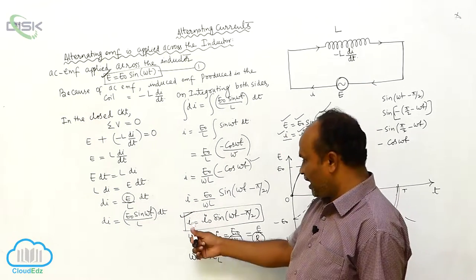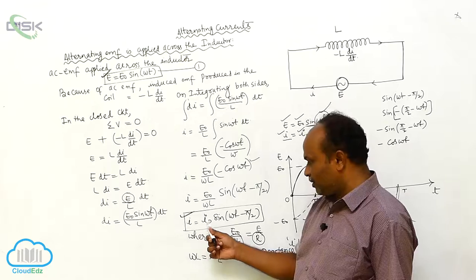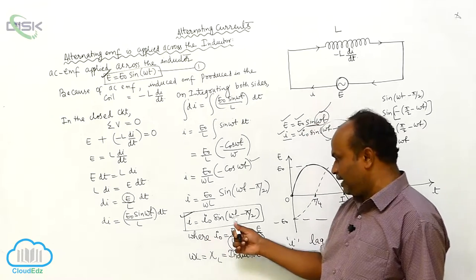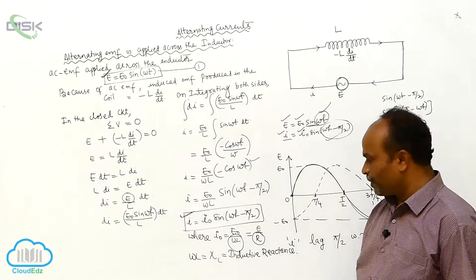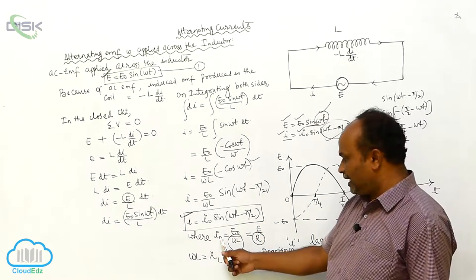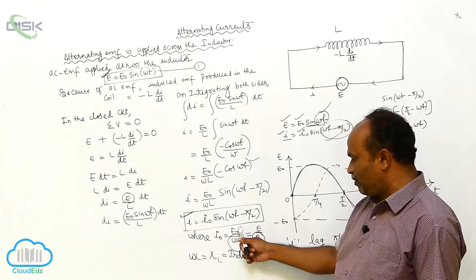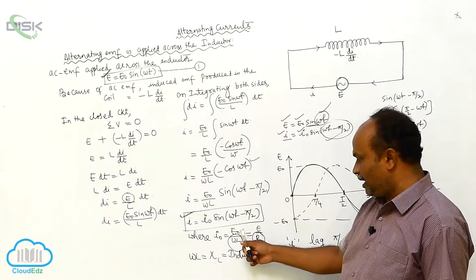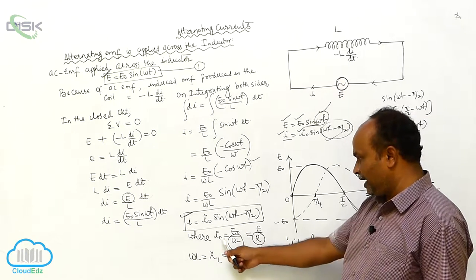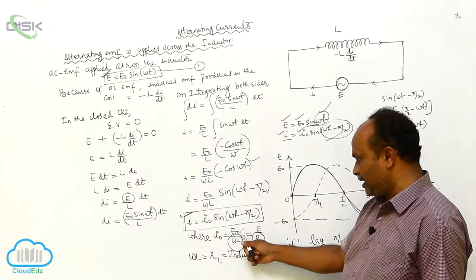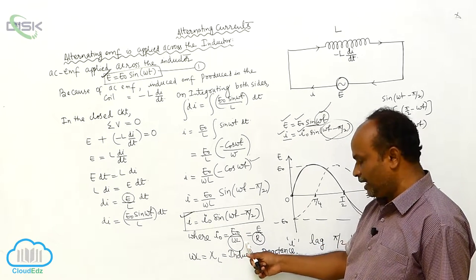In the equation, I is equal to I₀ sin(ωt − π/2). That is, I₀ is equal to E₀ by ωL.